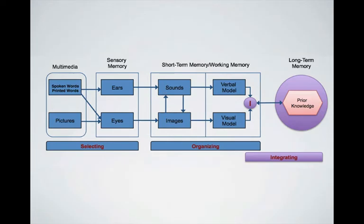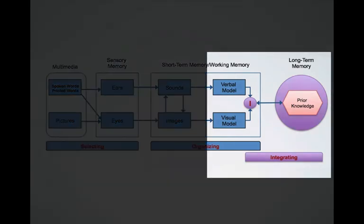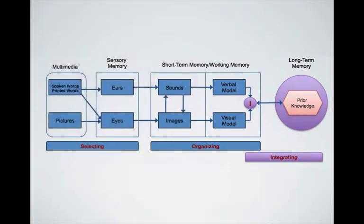In working memory, your learner can mentally organize some of the selected images into a visual model, and some of the selected words into a verbal model. It's at this point that your learner can then integrate the new incoming material with prior knowledge from long-term memory.